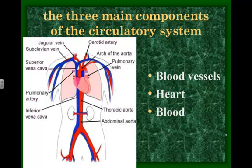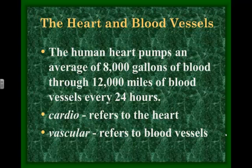There are three main components that make up our circulatory system. The blood vessels and the heart are what we're going to look at in lessons one and two, and then the blood is actually in lesson three, so that's going to be a separate quiz. You need to know the last facts of what cardio means and what vascular means.